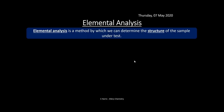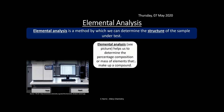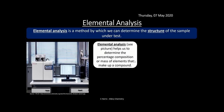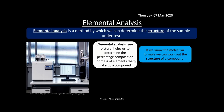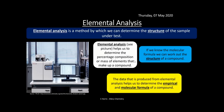Another technique separate from NMR is elemental analysis, which helps us determine the percentage composition or mass of elements making up a compound. If we know the molecular formula, we can work out the structure using elemental analysis in addition to NMR. The data produced helps determine the empirical and molecular formula — it tells you what percentage of the molecule's mass is made up of each element, such as carbon, hydrogen, nitrogen, and oxygen.